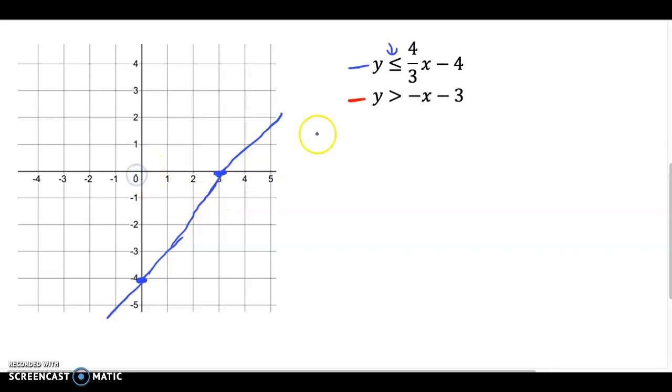So let's test 0, 0 again. So 0 is less than or equal to negative 4. That is not true. Negative 4 is smaller than 0. So I would shade on this side. So I'll go ahead and just throw a few little lines so we keep that in mind.